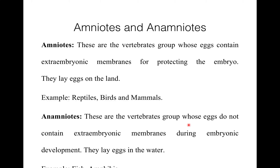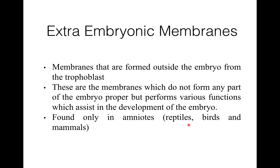Examples of anamniotes are fishes and amphibians. So this is about extra embryonic membranes. Extra embryonic membranes are those membranes which do not form any part of the embryo proper but perform various functions which help in the development of the embryo. They are formed outside the embryo from the trophoblast. Trophoblast is the outer nutritive layer of the blastocyst which later forms embryonic membranes.